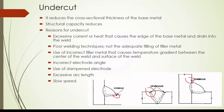With the reduction of the base metal thickness, the structural capacity of the element is reduced because the cross-section of the element is reduced. The main reasons for undercut are excessive current, excessive heat causing the base metal edge to melt and drain into the weld, reducing the section. Poor welding techniques — such as not providing adequate filler metal — could also cause the base metal to melt.